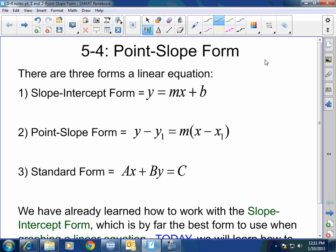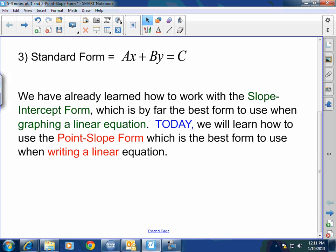Today's lesson, we're going to be talking about the point-slope form, which is y minus y₁ equals m times x minus x₁. And then tomorrow we're going to be talking about standard form, which is Ax plus By equals C. We have already learned how to work with the slope-intercept form. By far, the slope-intercept form is the best form to use when you're graphing a linear equation. Today, we will learn how to use the point-slope form, which is the best form to use when writing a linear equation.